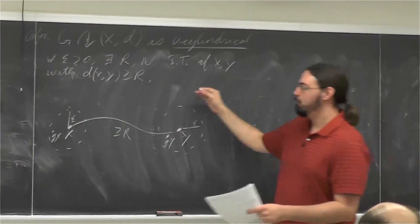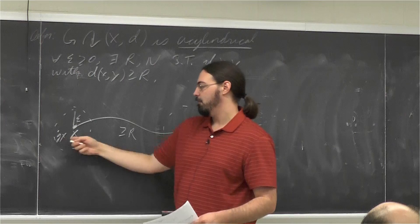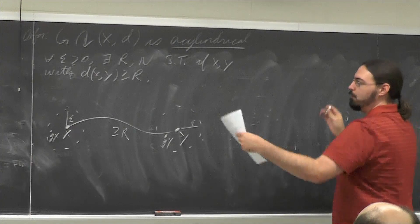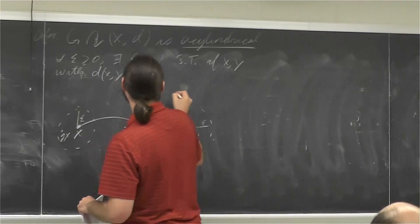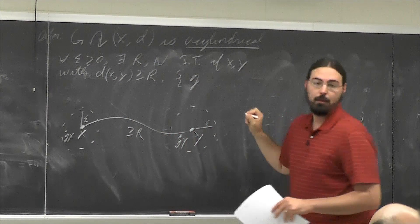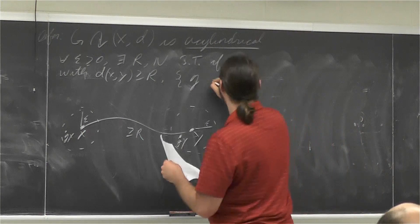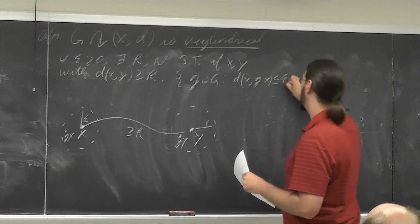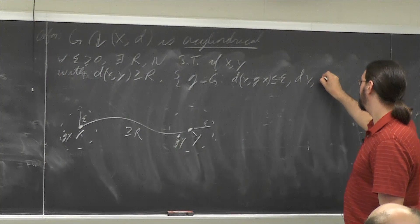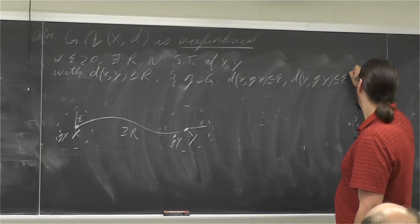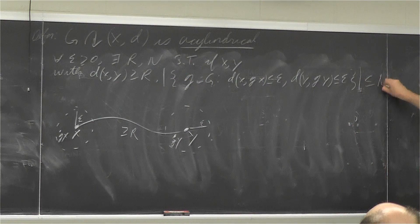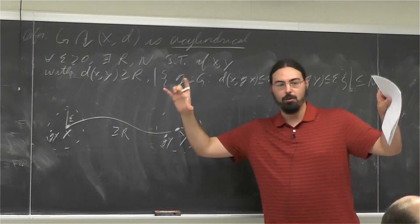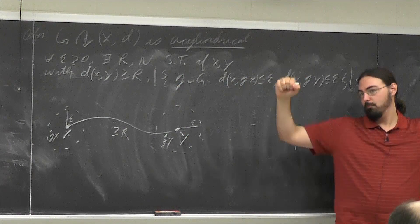One way to phrase a group being metrically proper is if the set of G that does this for a single X is finite. This is a weak form of properness: I say the set of group elements which take X to within epsilon of itself and Y to within epsilon of itself has at most N elements. Once I fix epsilon, points that are far away have a uniform bound on how many group elements move both of them close to where they started.